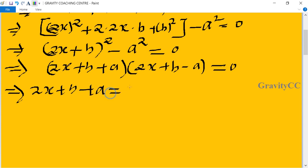So 2x equals minus (a + b), or 2x equals a - b.